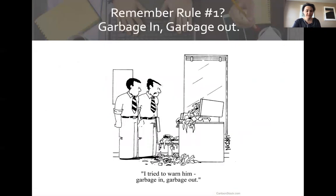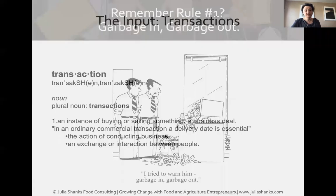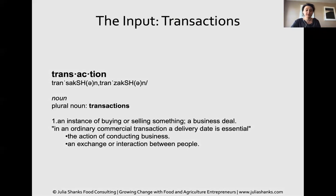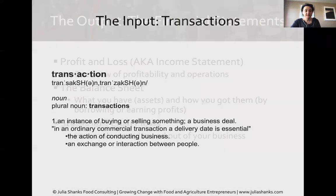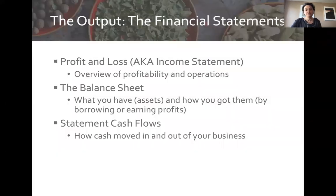From the first section, we talked about the first rule of bookkeeping: garbage in, garbage out. We want to make sure we have quality inputs into our bookkeeping system so we have quality outputs. The inputs are the transactions — all the little points of data we enter — and the outputs are the financial statements: the income statement, the balance sheet, and the statement of cash flows.